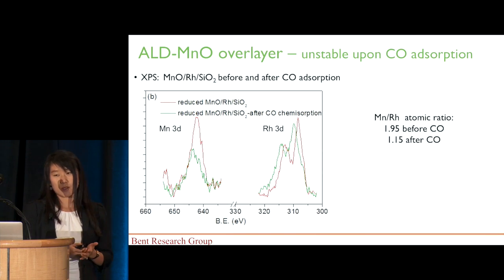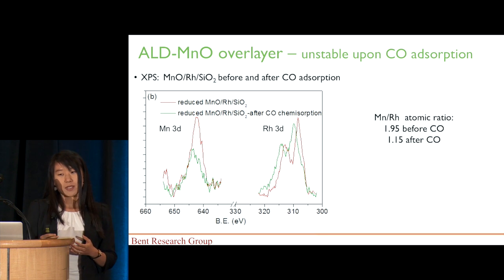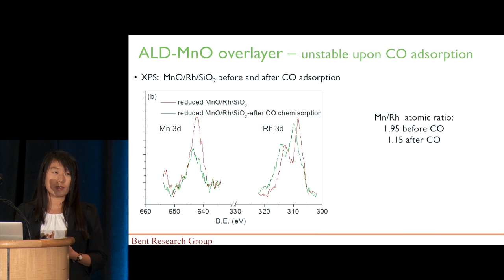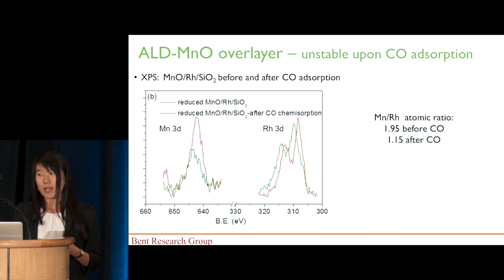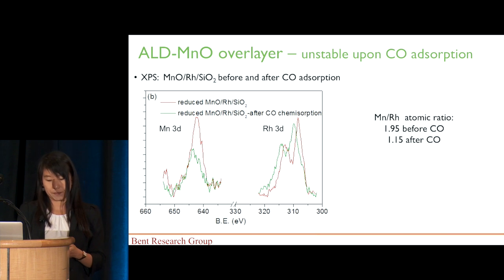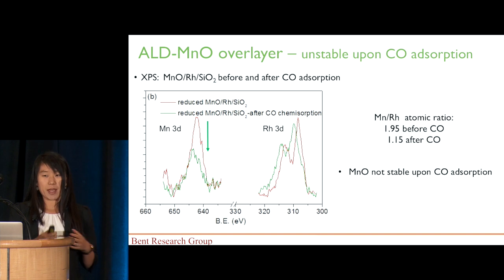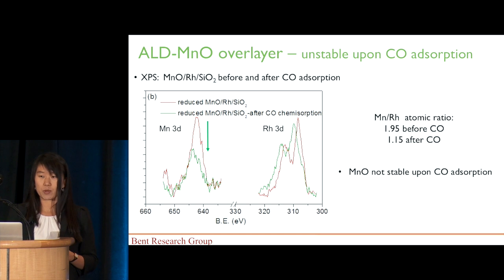From the reaction results, we know that the manganese oxide overcoat layer was not as effective as the support layer. However, it's usually hypothesized that the manganese species present on the rhodium nanoparticle surface should be responsible for the promotion effect. So we were wondering why, when we directly deposit manganese oxide on the catalyst surface, the results weren't quite good. Performing XPS, we noticed that after the catalyst absorbs CO, the surface manganese signal largely decreased. Therefore, the manganese oxide overcoat layer is not stable upon CO absorption, and as a result the promotion effect was not effective.